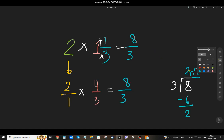So, copy. The quotient will be the whole number. The remainder will be the numerator. And, the divisor will be the denominator. So, 2 and 2 thirds.